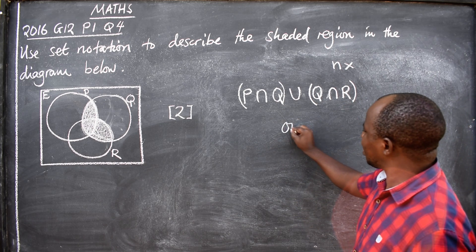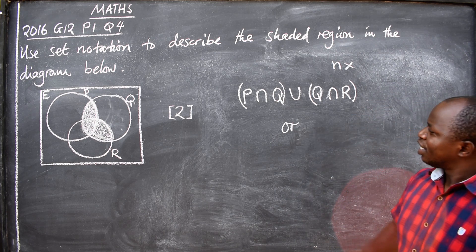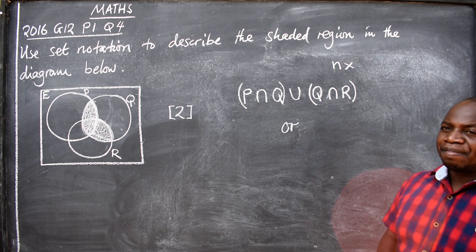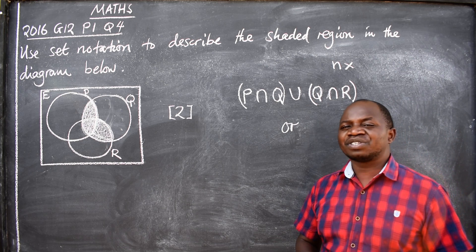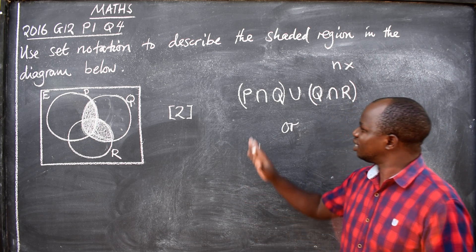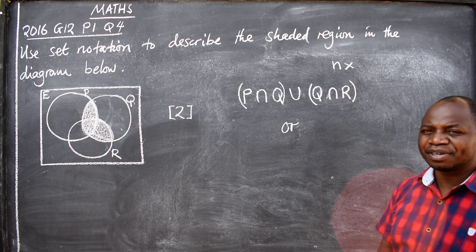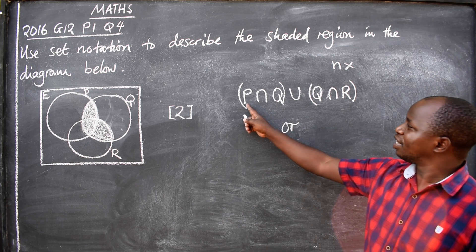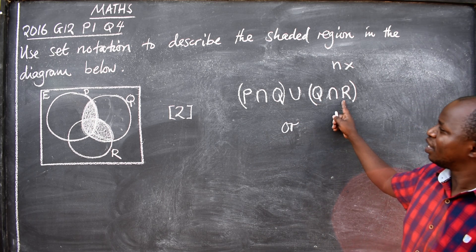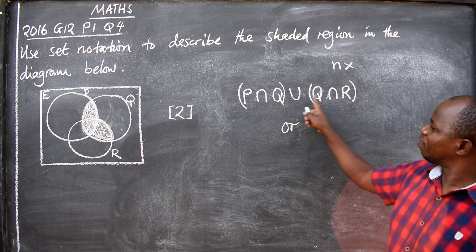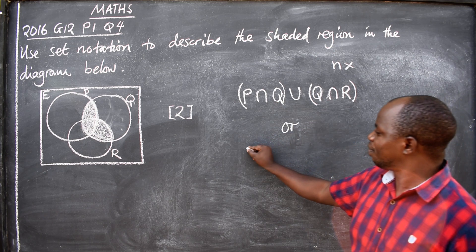If you don't want to write it in that way, you can still write it in another way. Look at what we have written here, what letter or set is common? Check out what is common: is it P? Do we have P here? No. Is it Q? Do we have Q here? Yes, so we have Q.